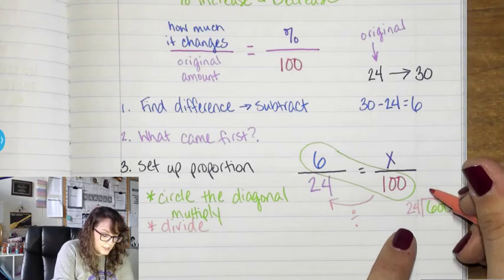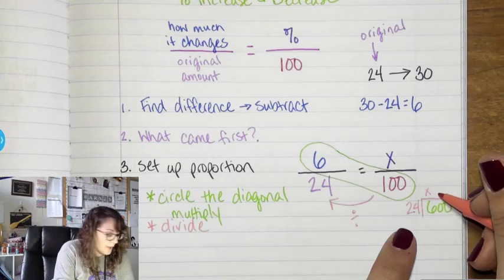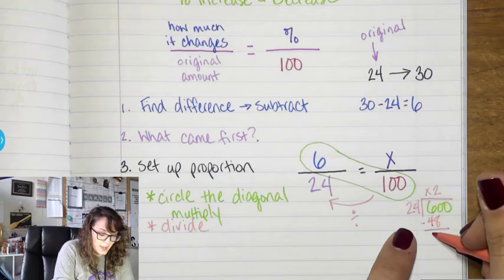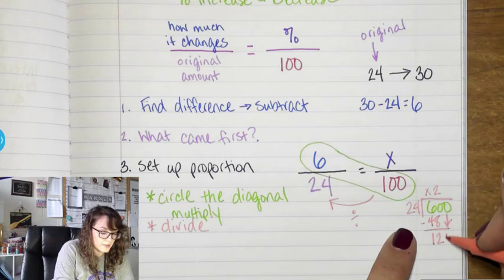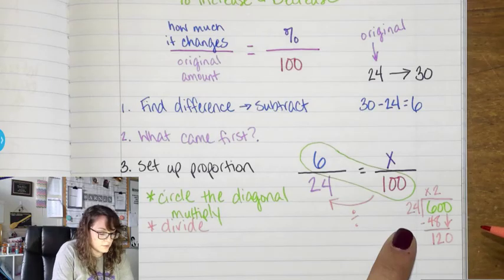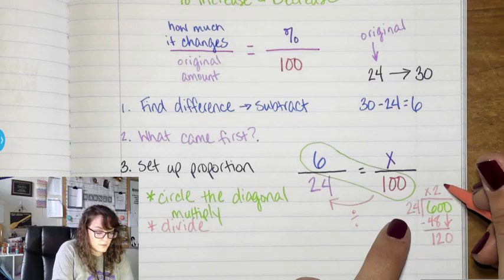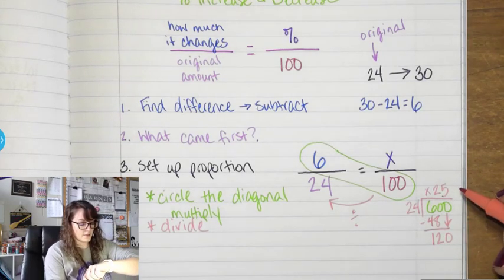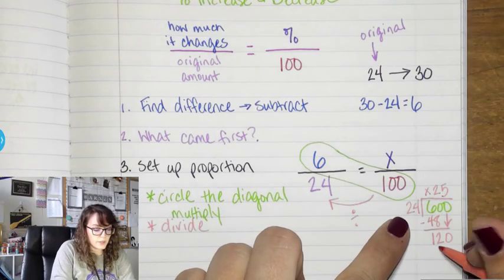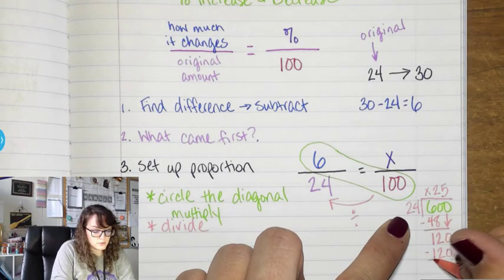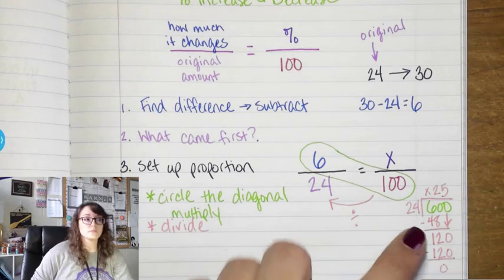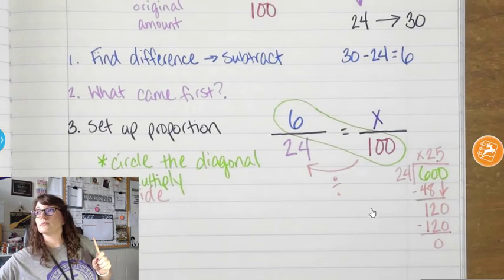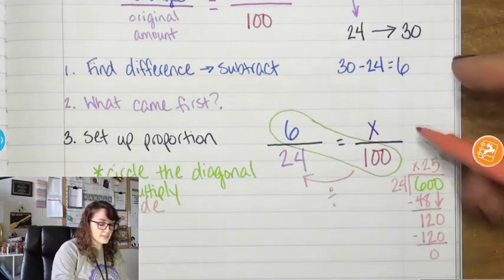Can 24 go into 6? No. Can it go into 60? Slow down — 24 goes into 120 five times. 5 times 24 is 120. So that 25 is the percent.